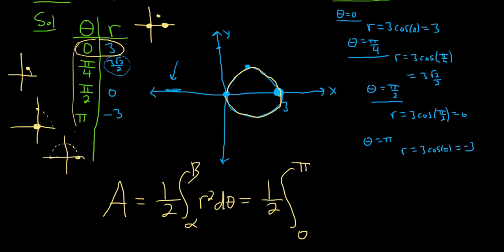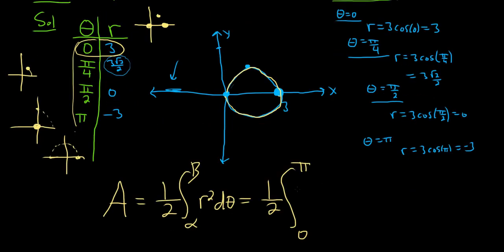and then R squared. So R in this case is 3 cosine theta. So it'll be 3 cosine theta squared d theta. So you see, it's really important that you figure out that it's traced exactly once between 0 and pi. If you just put a 2 pi here, it's going to get traced out twice, and you'll get twice the area.